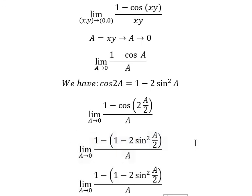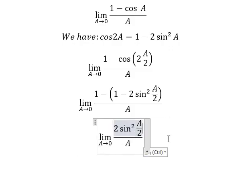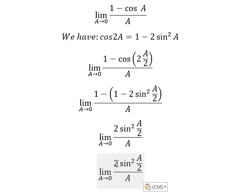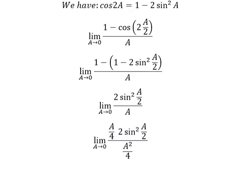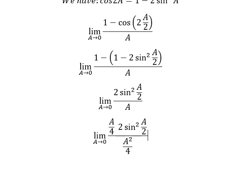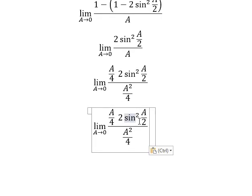So 1 minus 1, we can solve the negatives, negative negative gives positive. We need to multiply by 8 over 4 on numerator and denominator. We can combine A over 2 squared with A squared over 4.